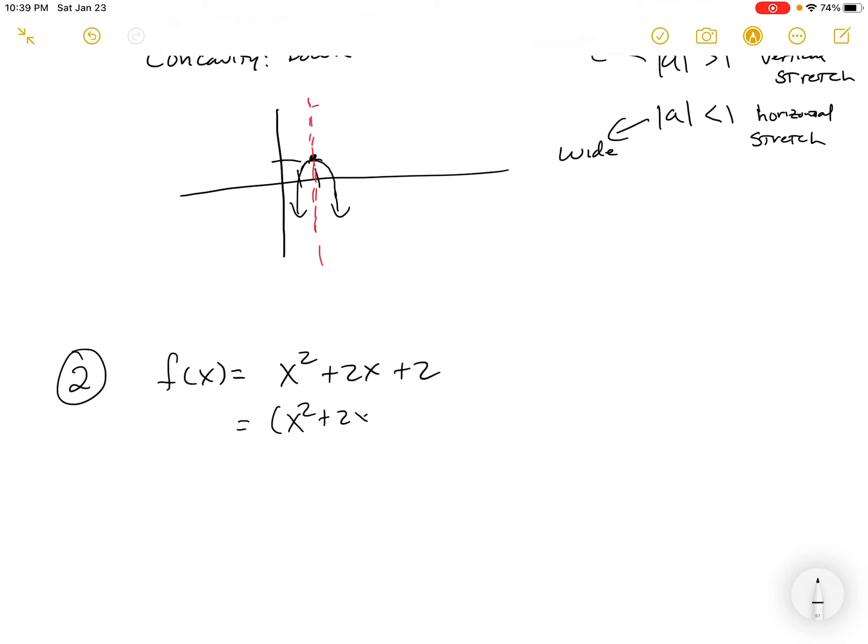Why is that nice? Because it makes all of our numbers nice integers. So you're going to have to complete the square just like you did in intermediate algebra. What do I add inside here and subtract on the outside that's going to allow me to have a perfect square trinomial? Half of the middle coefficient—half of 2 is 1, squared is 1. So what do we have? We have x plus 1 squared plus 1.